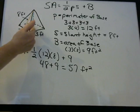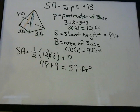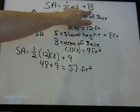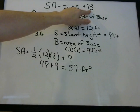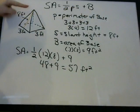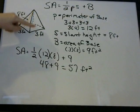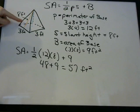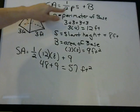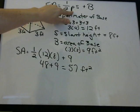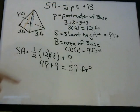Well, you're not going to paint the bottom. So you don't need this part of the equation — you don't need the area of the base. You just need the area for these four triangular sides, which is given by one-half times perimeter times slant height.